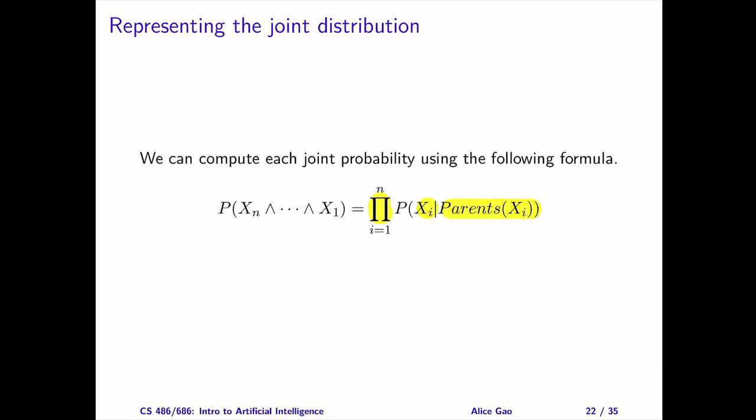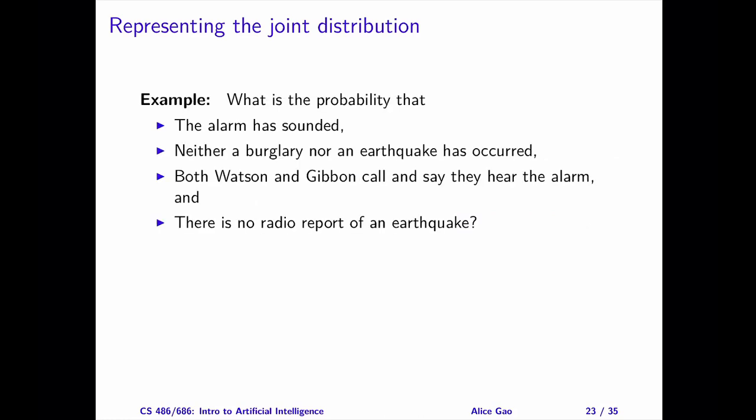Let me show you one example of the calculation. After that, you can practice using another example. Let's calculate the probability of the following event. The alarm has sounded. There is no burglary and no earthquake. Both Dr. Watson and Mrs. Gibbon are calling. There are lots of false alarms in this scenario. Nothing is happening. No burglary, no earthquake. Yet the alarm is sounding, and both Watson and Gibbon are calling.